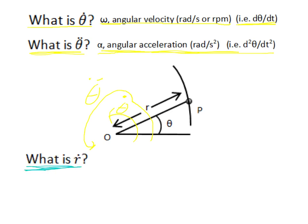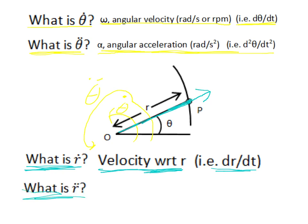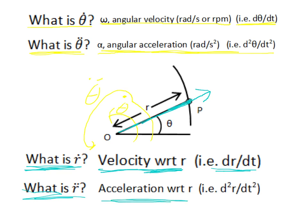r dot is the velocity with respect to r, i.e., dr/dt — that's the rate at which the r vector is getting longer. And r double dot is the acceleration with respect to r — the acceleration at which r is getting longer.